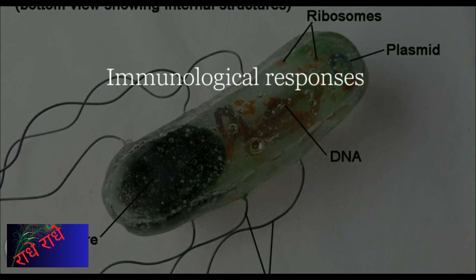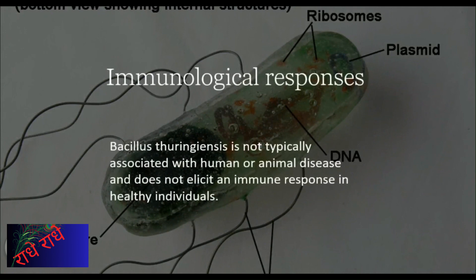B. thuringiensis is a well-studied, naturally occurring soil-dwelling bacterium that is commonly used as a biopesticide. Upon ingestion, it is toxic to certain insect larvae and has proven to be effective in controlling insect-borne diseases, protecting crops, and helping to sustain healthy ecosystems. Its lack of immunostimulatory effects make it a highly efficient and safe method for managing insect pests.